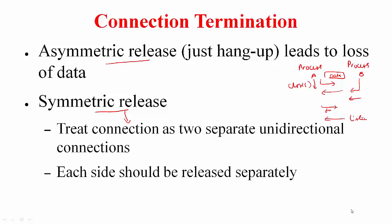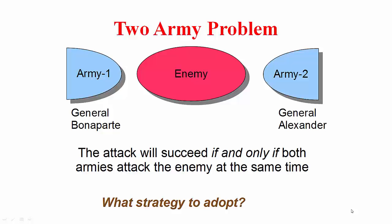And this symmetric release is a tricky business. Let me motivate this through the two army problem. This is a very famous problem posed in the context of distributed systems. There is the blue army and then there is the red army, which is the enemy of the blue army. The blue army is split — one battalion is on top of one hill and the other battalion is on top of another hill, and this enemy is in the valley.